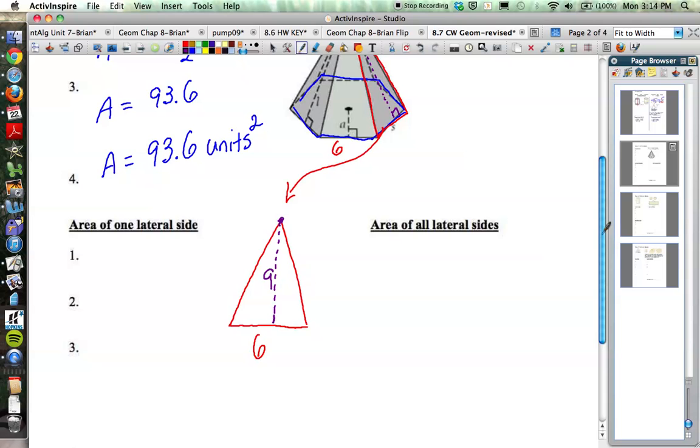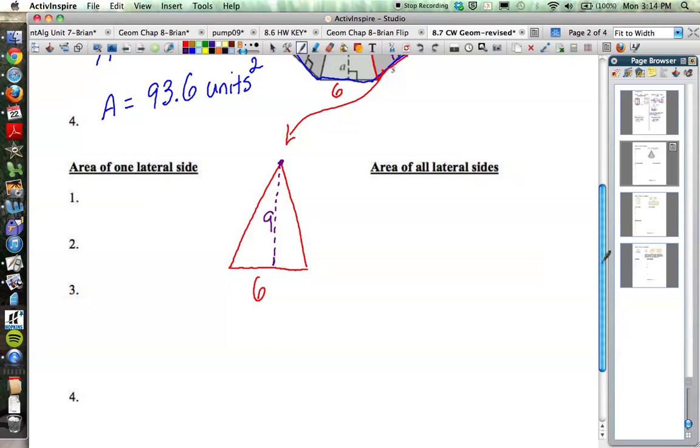So therefore, the area of one of those lateral sides, since it is a triangle, and since this is 90 degrees, we have the base and the height. Area of a triangle is base times height divided by 2. So the area would be base of 6 times height of 9 divided by 2. That would be 54 divided by 2, which leaves us an area of 27 square units for one of those triangles.